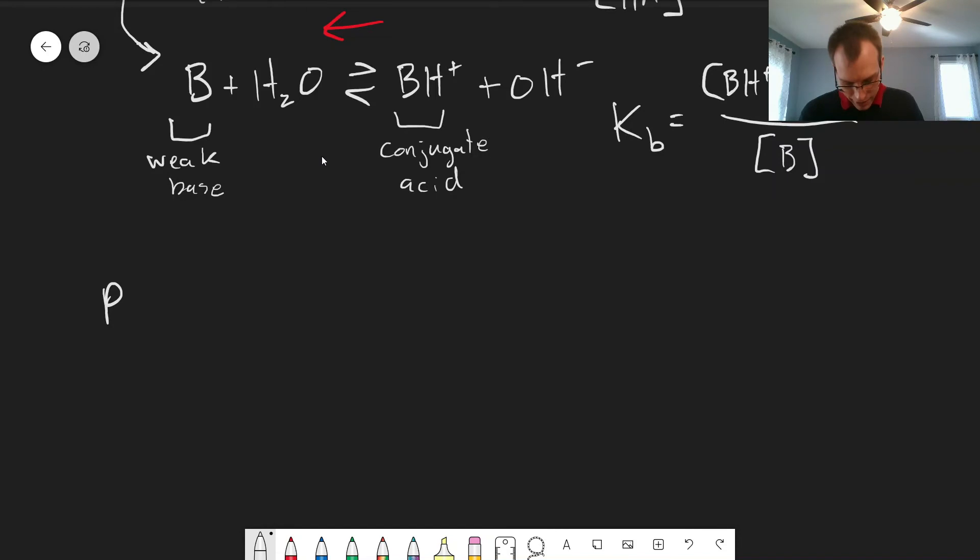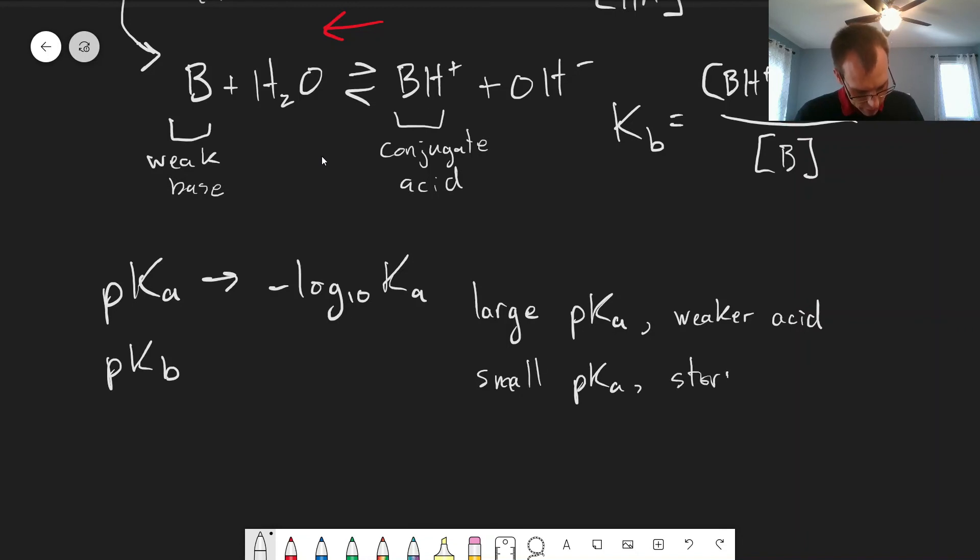And often, we will write these as pKa values or pKb values, and these are usually how you'll see these quoted in the literature. And this is the same definition as we use for pH, negative log base 10 of Ka. So if we have something that has a large pKa, that would be a weaker acid, much like if we have a higher pH value, it's a lower concentration of hydrogen ion, and a small pKa would be a stronger acid.